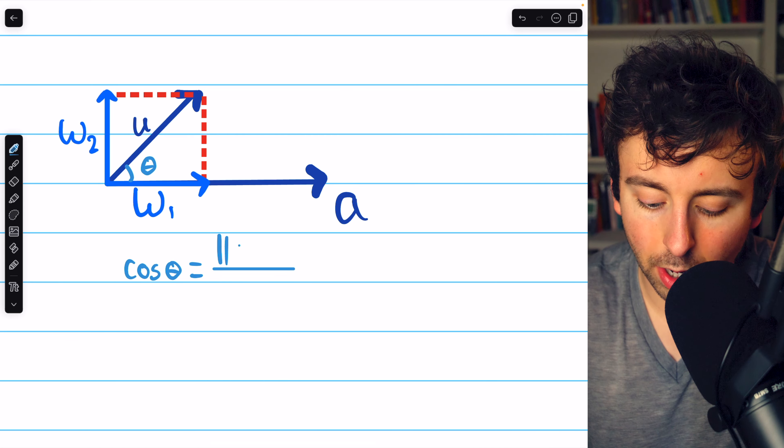We can actually express this as a dot product. By definition, we know the dot product u·a is cosine of theta. Theta we took to be the angle between u and w1, but because w1 is a scalar multiple of a, theta is also the angle between u and a. So u·a is cosine theta times the product of their magnitudes.